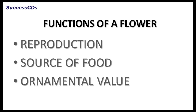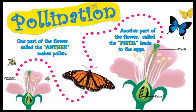The ovary turns into a fruit and the ovules turn into seeds after fertilization. The flower helps in reproduction and leads to the formation of fruits and seeds. Flowers of many plants are used as food too, and nectar is a food for insects. We also use flowers for their ornamental value. The flower develops into a fruit only when pollen grains from the anther get transferred to the stigma of the pistil. One of the agents of pollination is a butterfly.